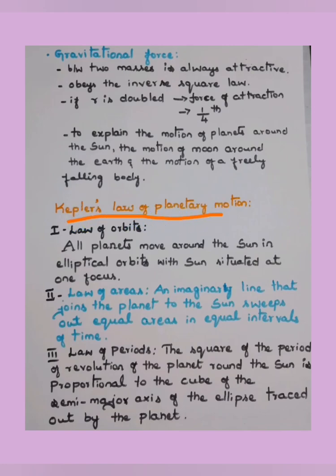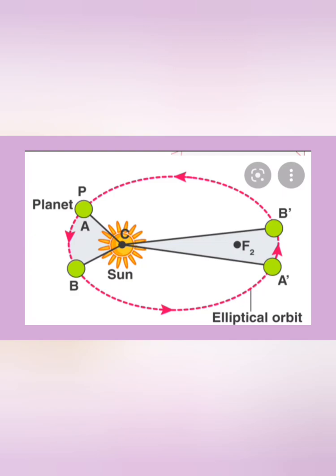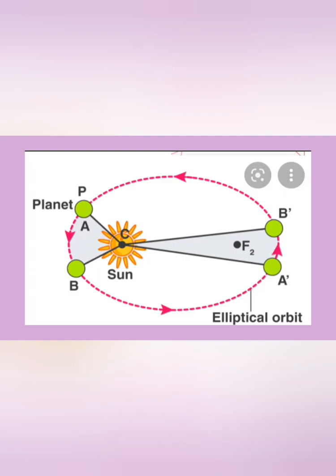Now we move to Kepler's laws of planetary motion. Johannes Kepler proposed three laws explaining the motion of planets. The first law is the Law of Orbits: all planets move around the sun in elliptical orbits with the sun situated at one focus. In the figure, the elliptical orbit shows the sun at the focus point — not at the center, but at a focus.